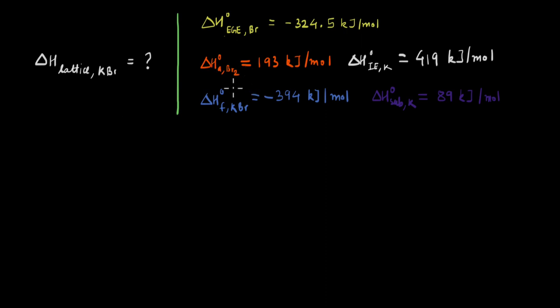To start with our calculation, we first look at the information that is given to us and let's start by writing the reactions for which these enthalpies are given. If we start with standard enthalpy of formation of potassium bromide, we can write the reaction like this and for this reaction, the enthalpy value is known.